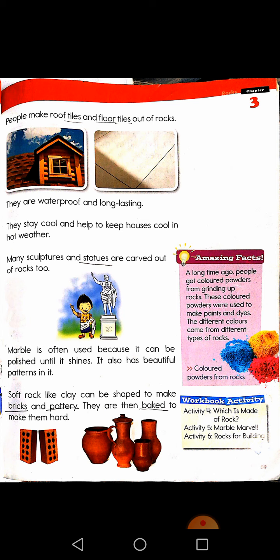Amazing facts! A long time ago, people got colored powders by grinding up rocks. These colored powders were used to make paints and dyes. The different colors come from different types of rocks. For example, chalk comes in different colors.